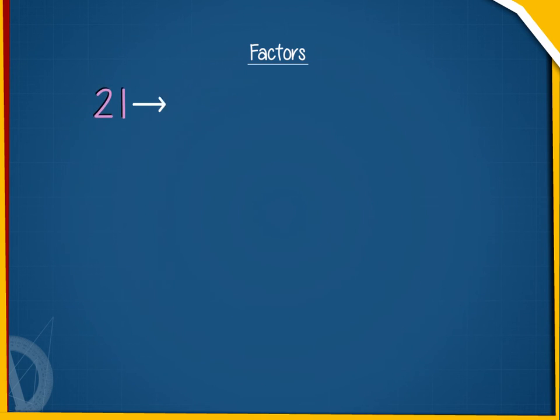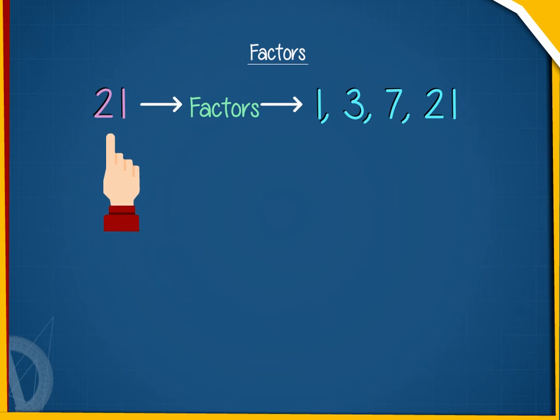In the same way, if we take the number 21, it has 4 factors, namely 1, 3, 7, and 21.